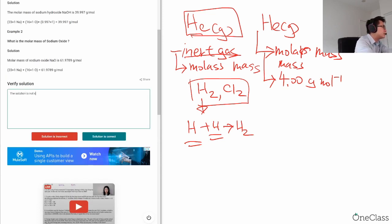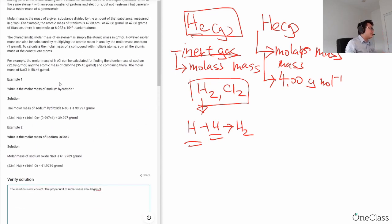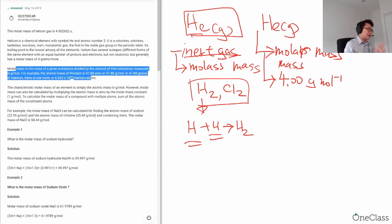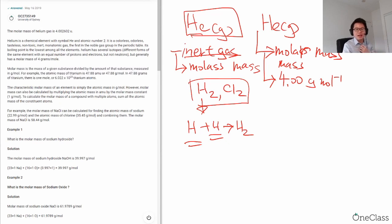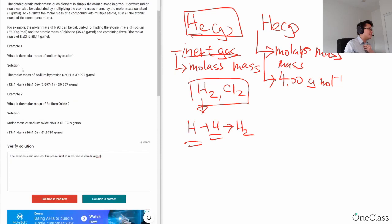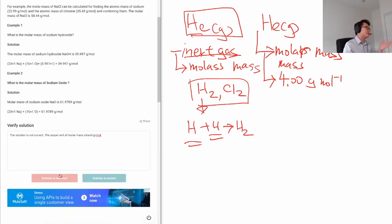So the solution is not correct. The proper unit should be grams per mole. Again, we're looking at one mole of atoms, so the unit is grams per mole. This is obviously just a concept check question, so the solution is not correct.